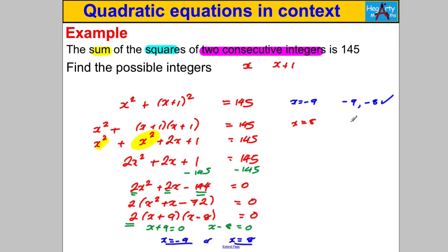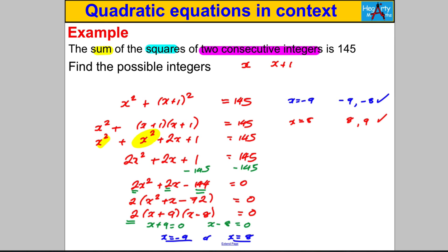When X = 8, the two consecutive integers are 8 and 9. 8² + 9² = 64 + 81 = 145 — that also works. So there are two sets of possible answers. That's pretty much it for this skill. In the PDFs below there's an extra example — an even harder case — for you to work through if you want an extra challenge. Otherwise, that's it for this video. Thanks for watching.